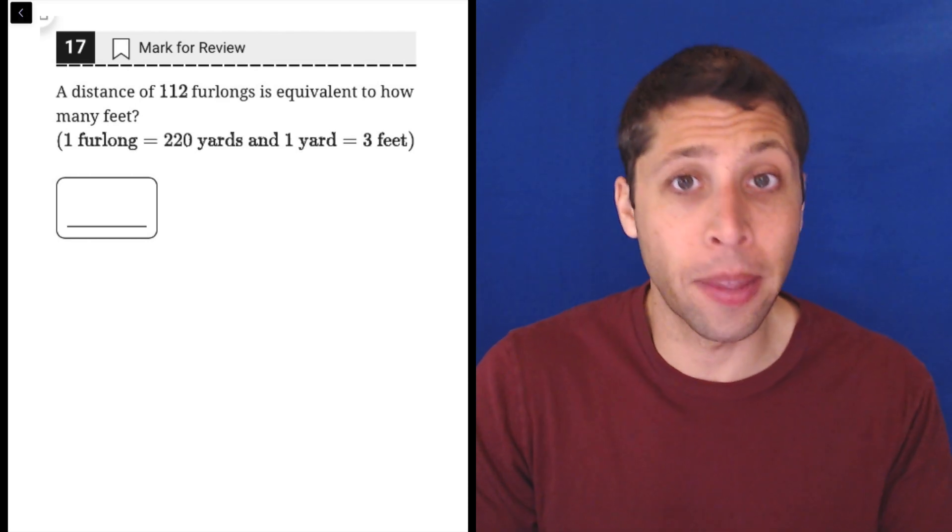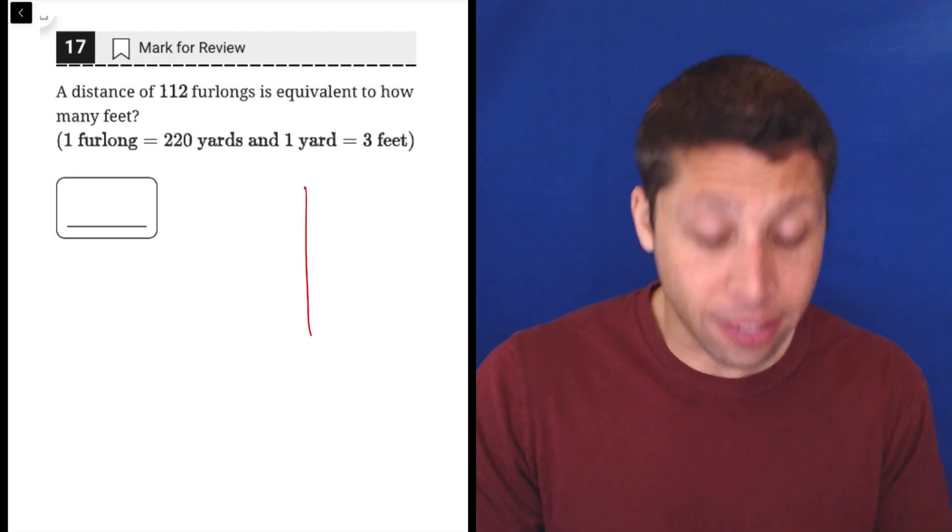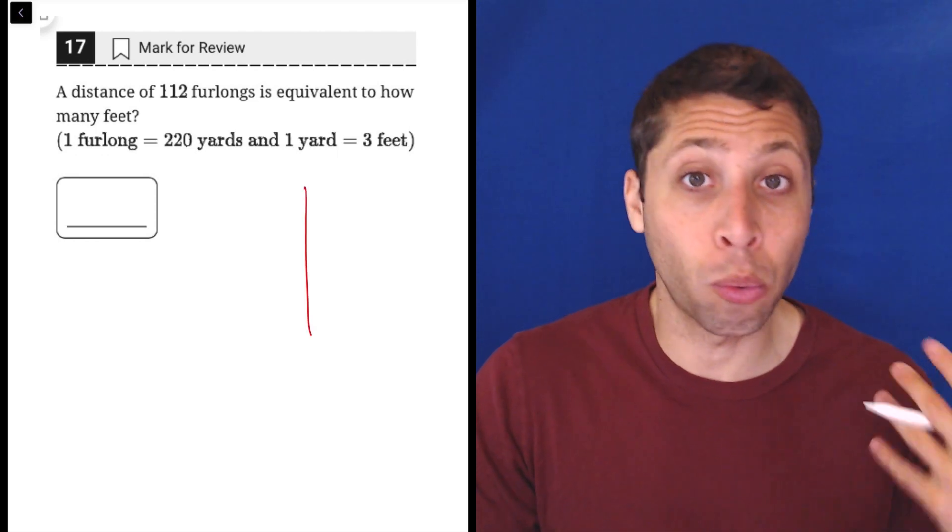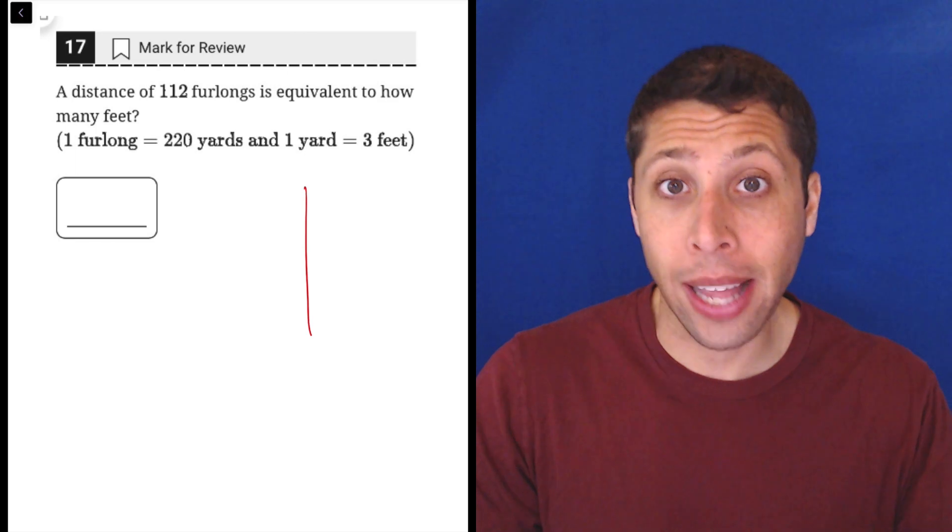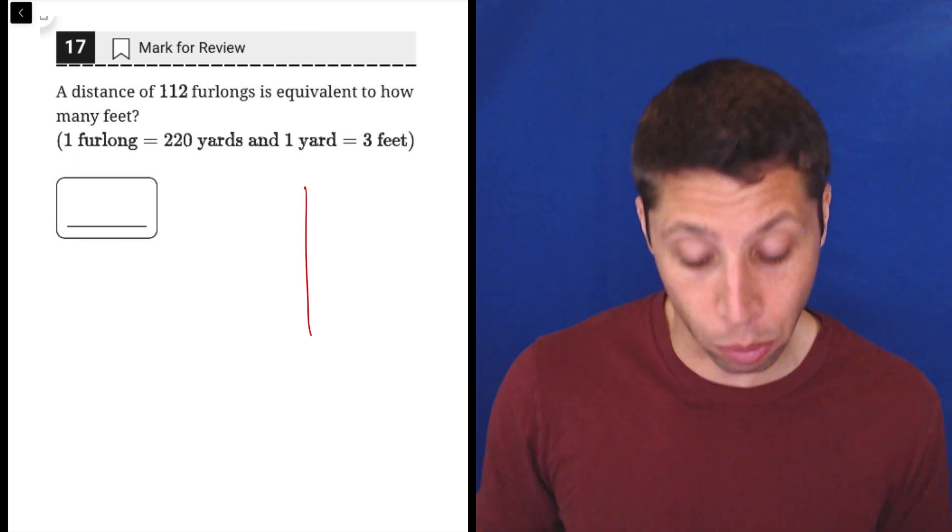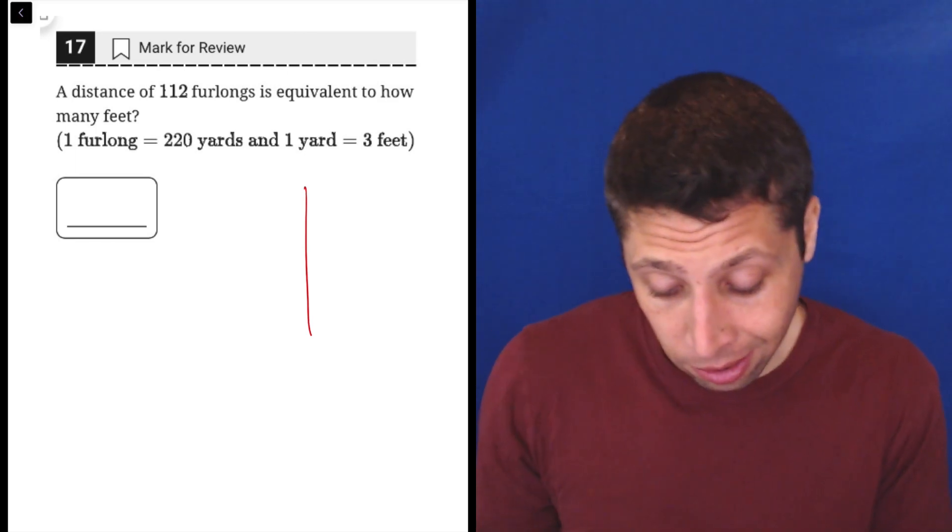So here's a system that I like. Basically, you make a chart. And it's going to have two columns. And anytime we have a rate or a conversion, we're just going to write that down in the chart and we're going to keep track of the units.